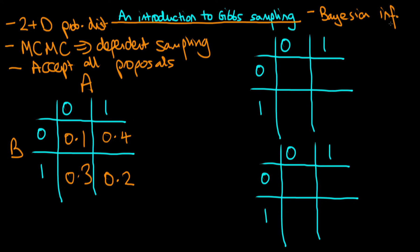It is actually the kind of method that underlies the BUGS and JAGS languages. In order to explain what is meant by Gibbs sampling, I'm going to use an example, and hopefully through the example you should see how this process works. And then afterwards, I will formally define the algorithm.